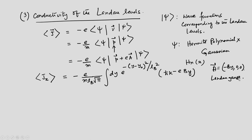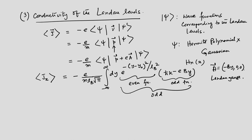The integral runs from −∞ to +∞. The exponential Gaussian is an even function and the remaining factor is an odd function of y, so the integrand is odd. The integral of an odd function over (−∞, +∞) is zero. Therefore J_x = 0. This confirms that Landau levels do not conduct due to their flatness — though it raises the question of how Hall conductivity arises at all.